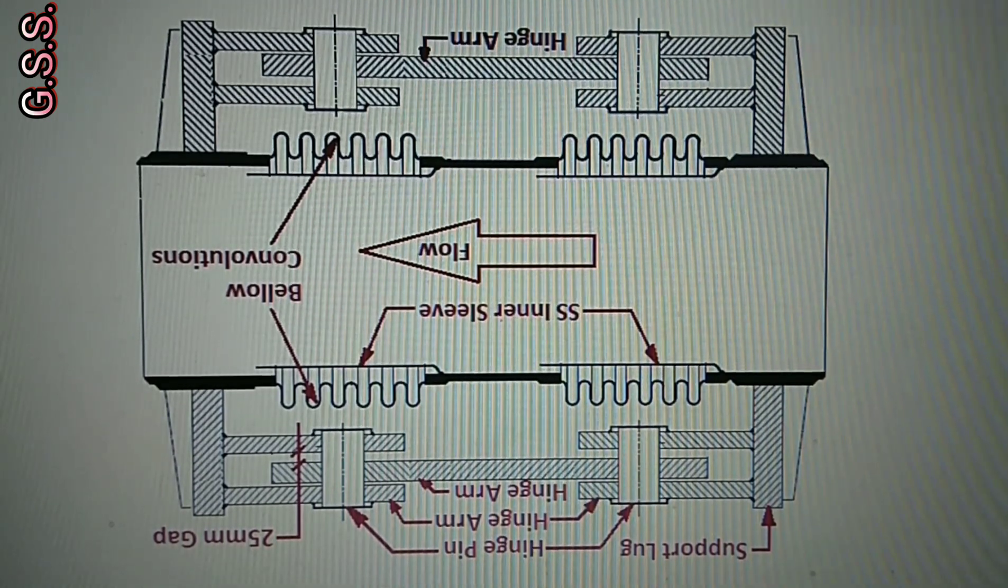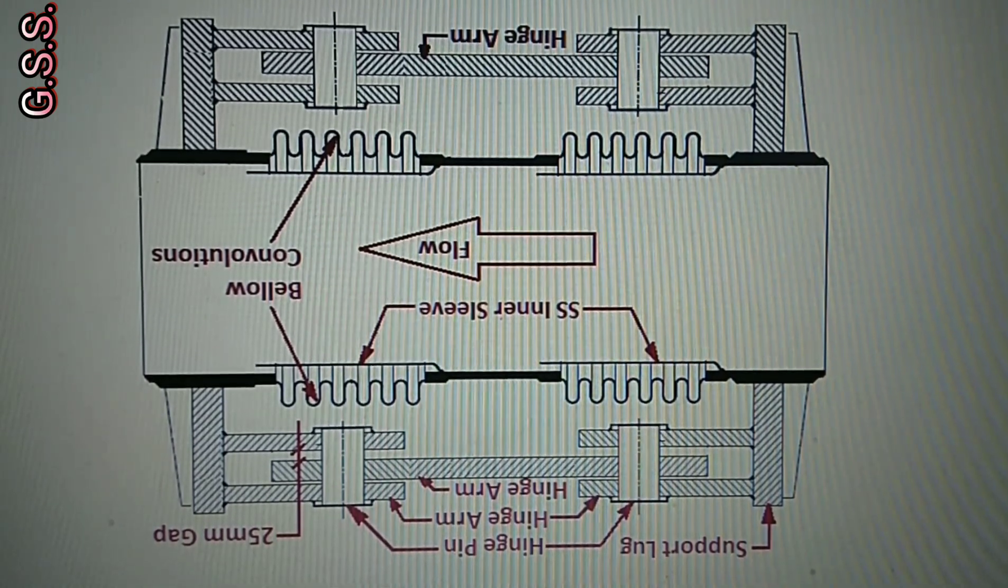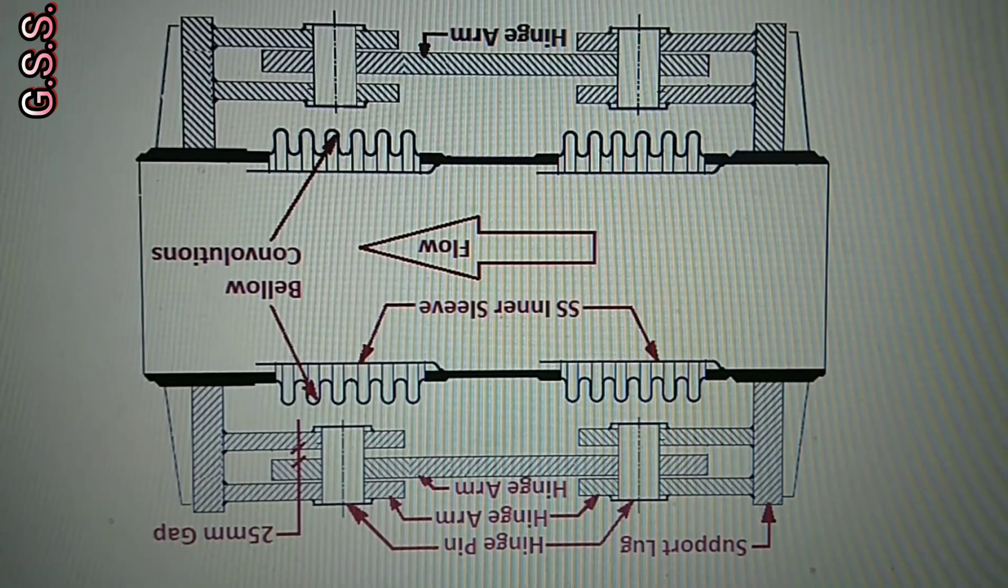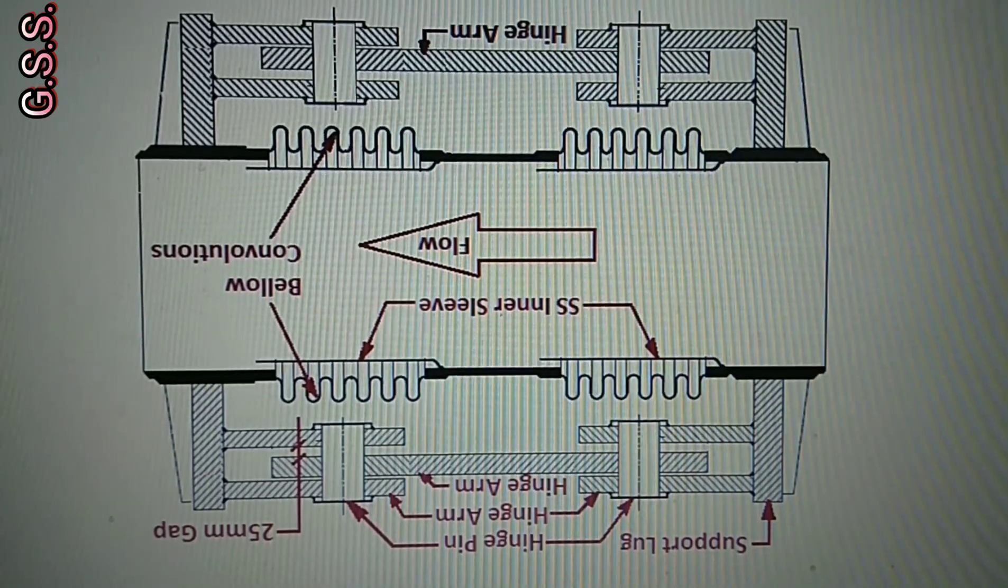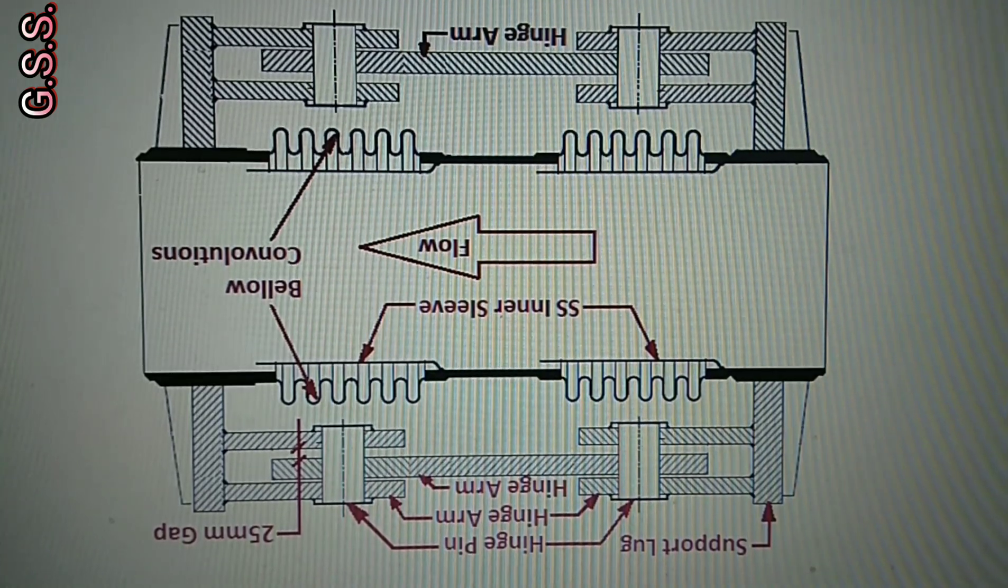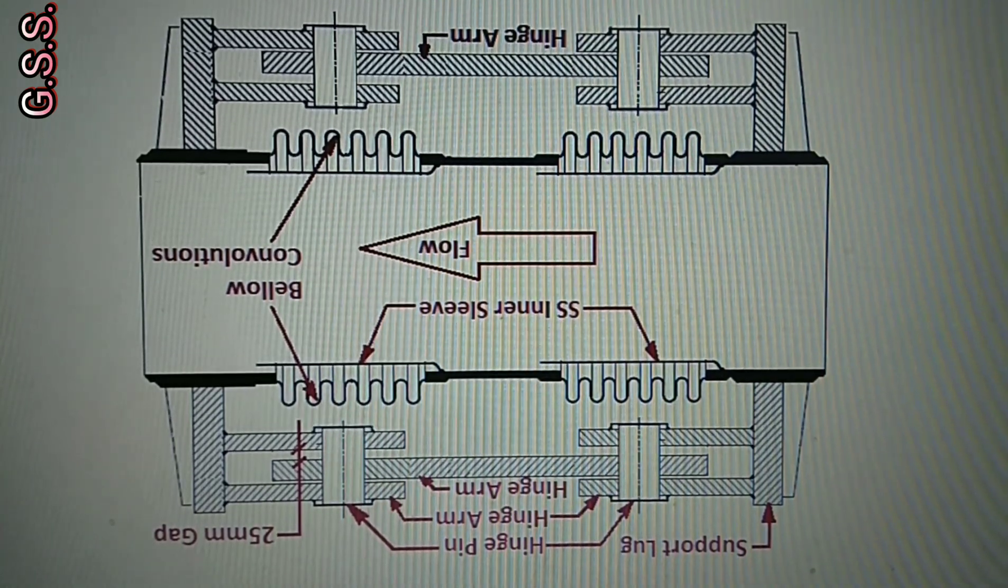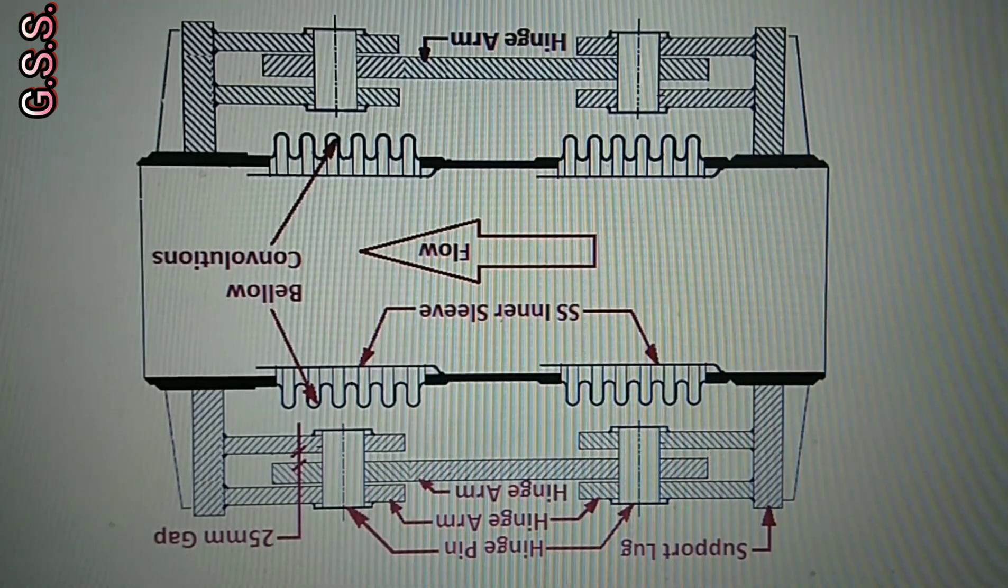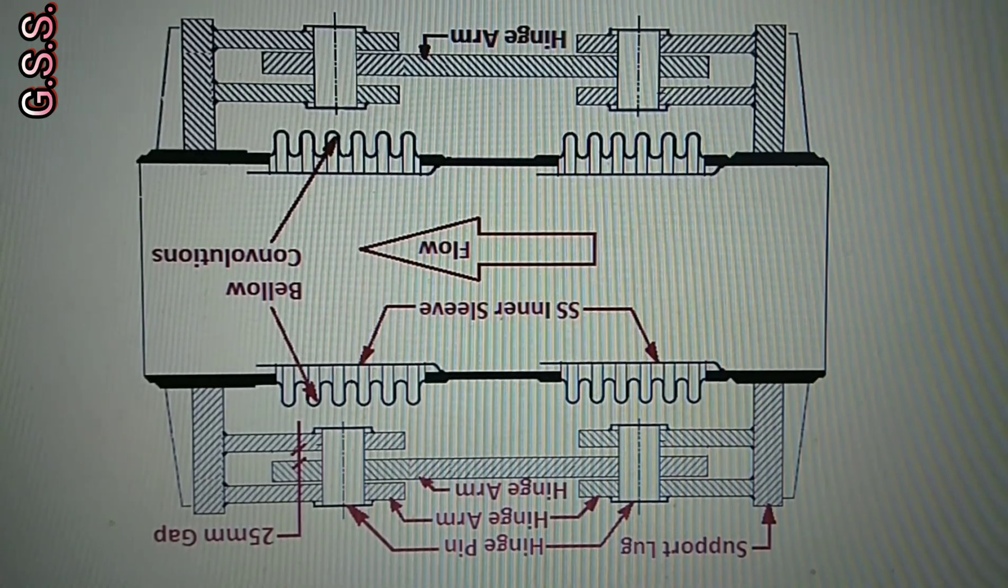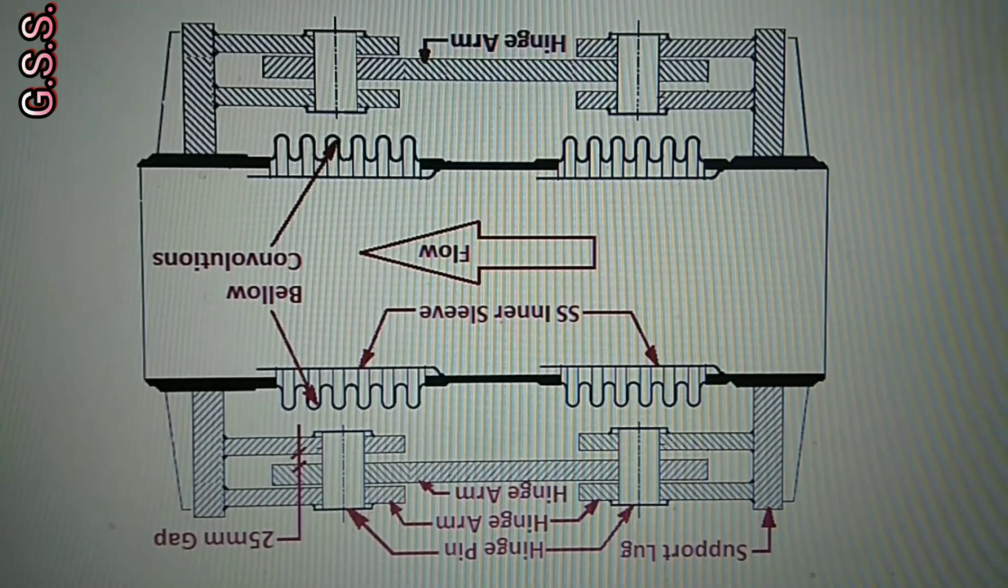Since the bellows size is 32 inch, cross sectional area of the bellows is about 5000 centimeter square and if the internal pressure is 10 kg per centimeter square gauge, then axial pressure thrust will be 5000 into 10 equals to 50000 kg.